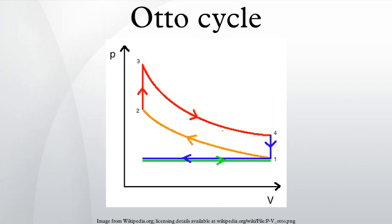Process 0 to 1, Intake Stroke: A mass of air is drawn into the cylinder from 0 to 1 at atmospheric pressure through the open intake valve, while the exhaust valve is closed. The intake valve closes at point 1. Process 1 to 2, Compression Stroke: The piston moves from crank end to cylinder head end as the working gas with initial state 1 is compressed isentropically to state 2 through the compression ratio. Mechanically, this is the isentropic compression of the air-fuel mixture in the cylinder, also known as the compression stroke.